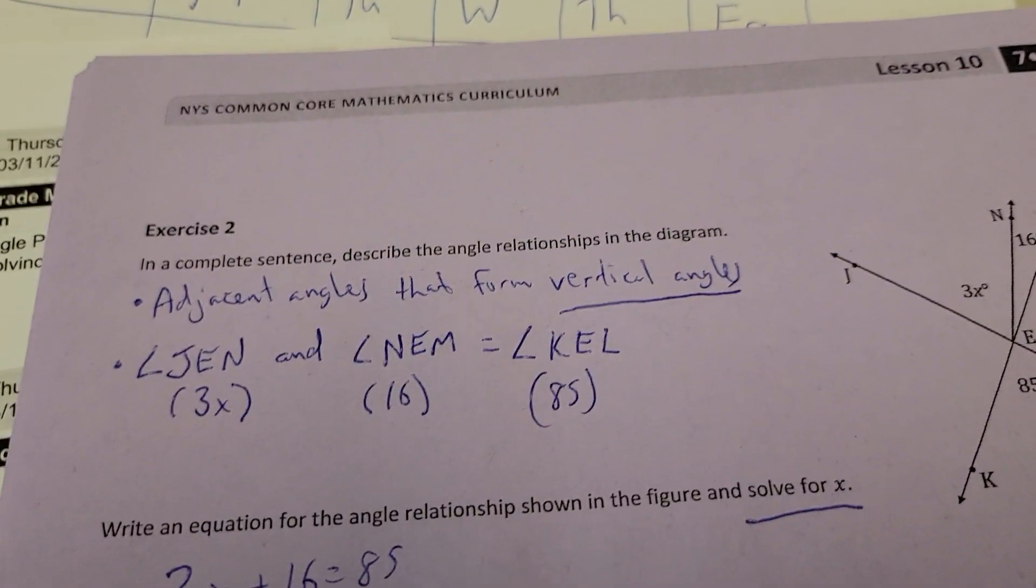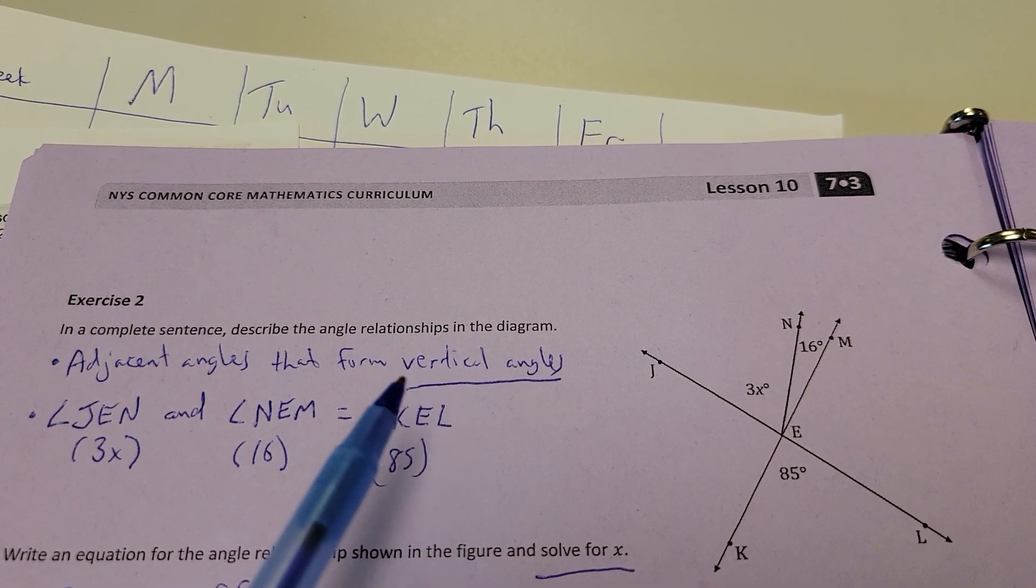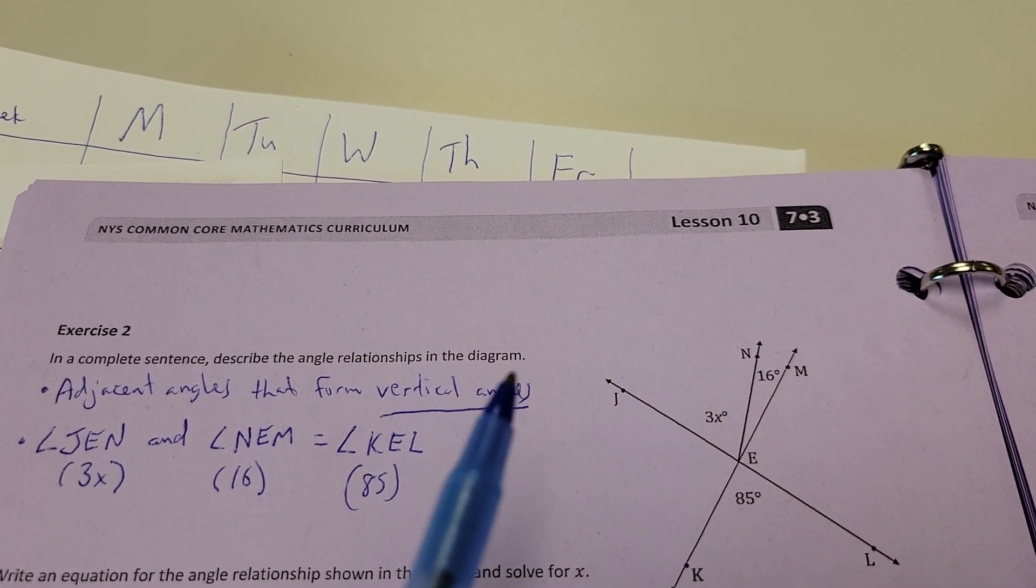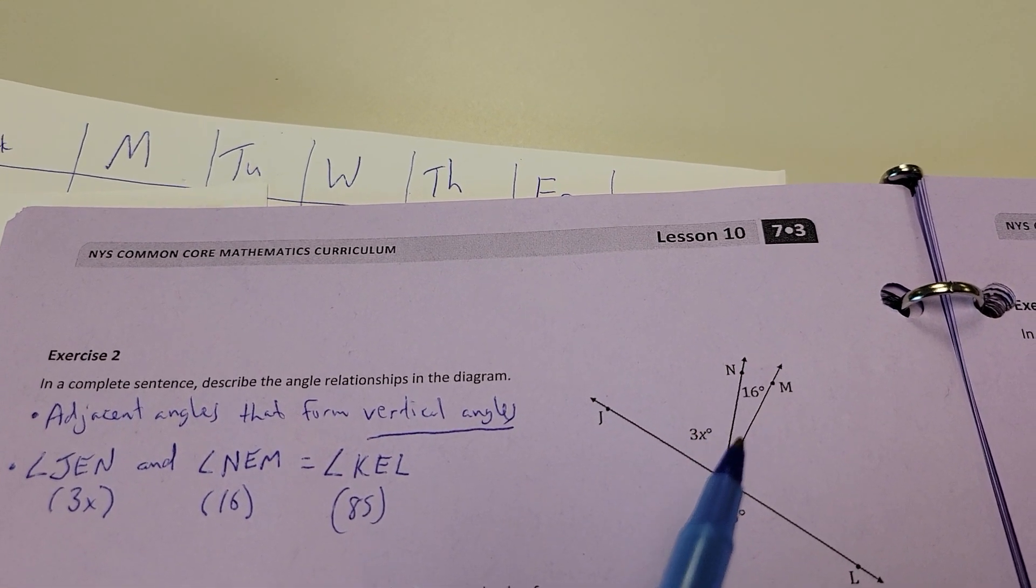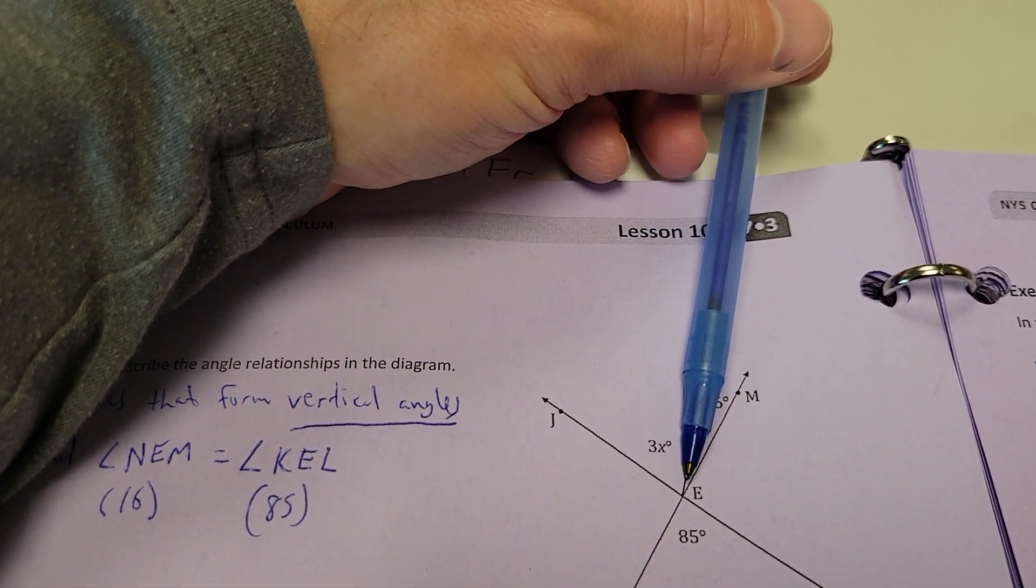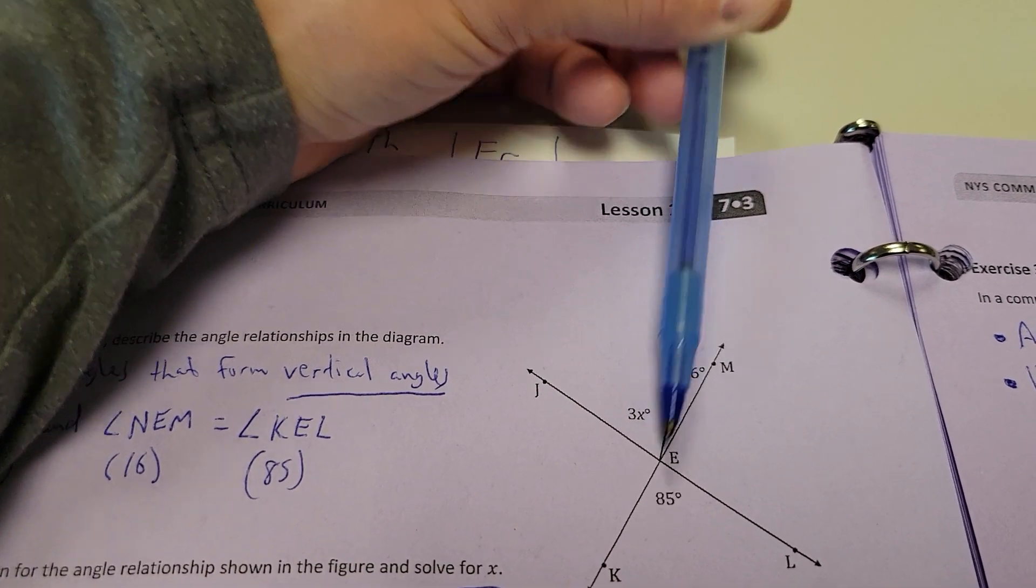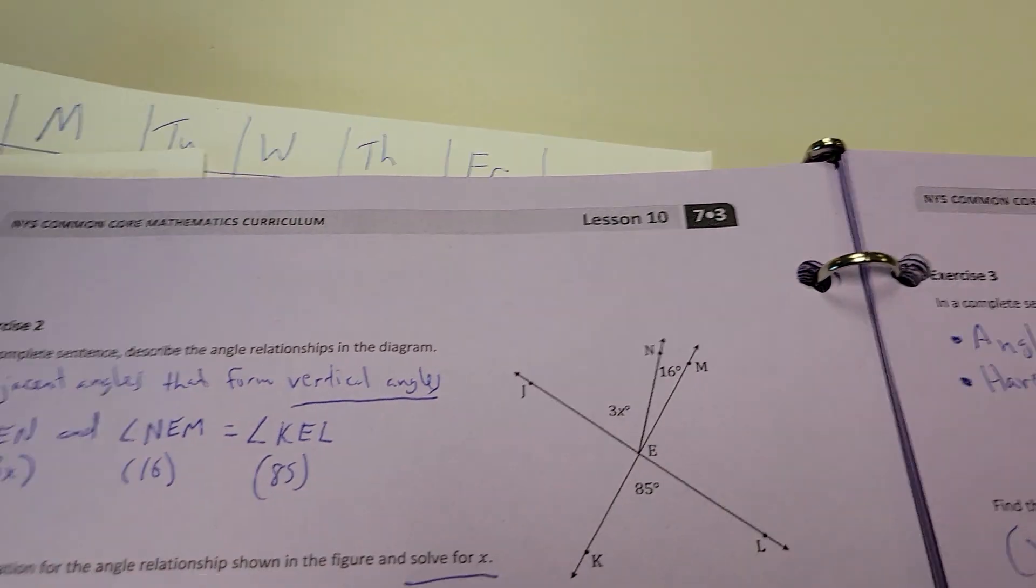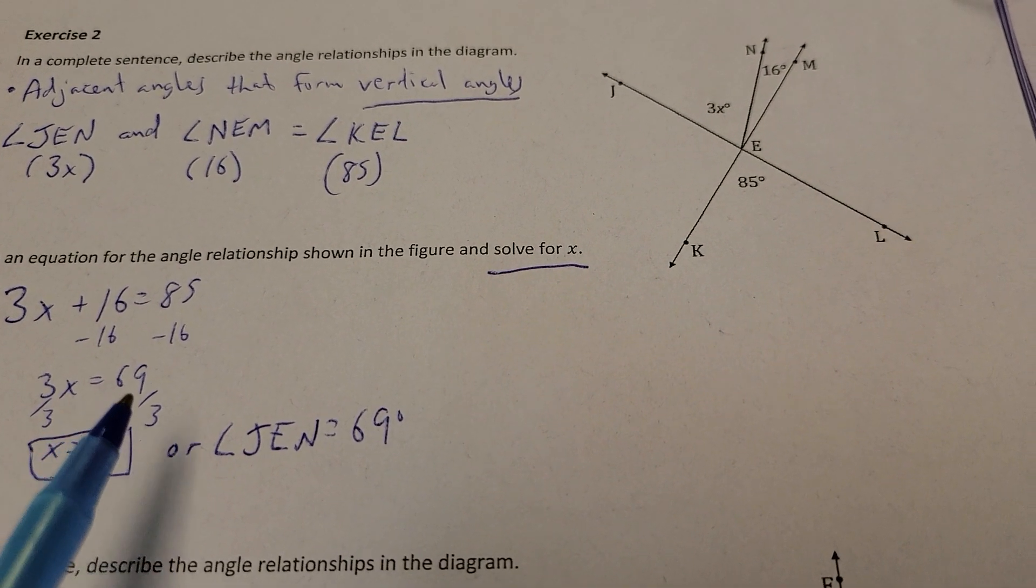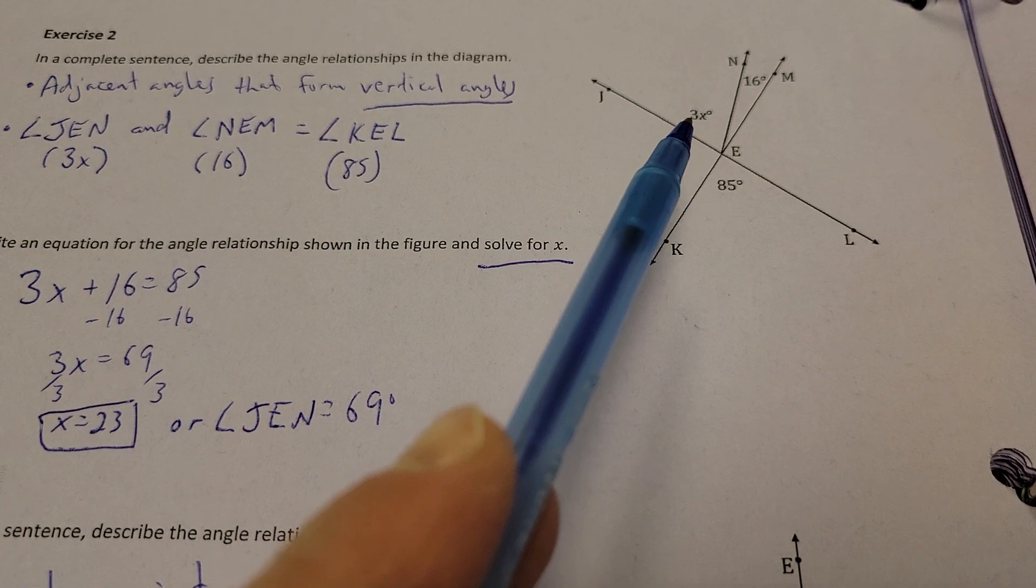Next up, number 2. What's going on in this picture? We're trying to find our angle relationship here. Well, we have angles that form vertical angles. And how does this work? Well, angle JEN, so this angle right here, and angle NEM, the small one right here. Together, those two make a match for this one. If I cover up this line just a tiny bit, you can see there's like a perfect intersection of lines. So, it's a perfect X shape. So, that means that these two angles, here and here, are going to add up to this. So, as I build that, 3X plus 16 equals 85. And subtract 16 from each side. 3X equals 69. And then divide by 3 on each side. You get 23. Or, in this case, since X is 23, times it back by 3 again. You get 69 degrees for your total.